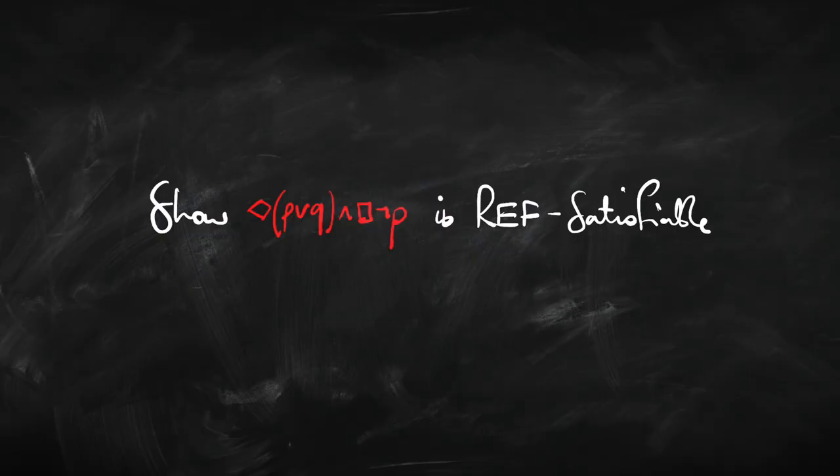Let's see how this works with an example. We're going to try to show that the sentence — diamond (P or Q) and box (not P) — is ref-satisfiable: true at some state in a reflexive model. Before I show you the official technique for doing this, I want you to have a go. Just have a guess — try and find a model that's got a state in it that makes this sentence true. Hit pause on the video, have a go at that, and then when we come back I will show you the official way of doing it, and let's see if our answers agree.